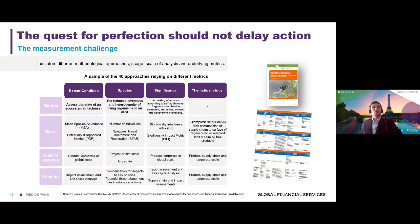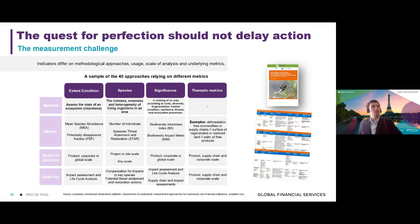How can we measure biodiversity on a given territory or the impact of a company on biodiversity? There are plenty of metrics and indicators — synthetic ones and ones specific to a given territory. Forty of them have been benchmarked by the European Commission; you can find that document in the article. They are very different in their methods: some assess the state of an ecosystem, others assess the richness, evenness, and heterogeneity of living organisms in an area, and others rank an area according to rarity, diversity, fragmentation, and habitat conditions.